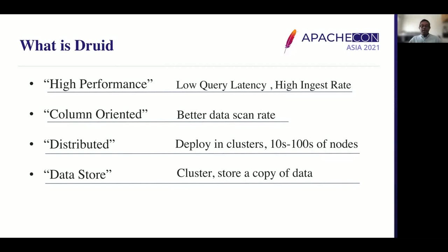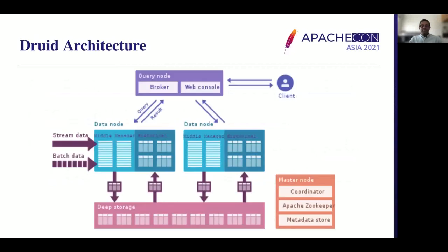For those new to Druid, let me take a minute to explain the Druid architecture and its components. We have query node, data node, and master node. The master node holds the coordinator service, which coordinates and manages all the historical data. The overload service manages the ingestion part. The query node accepts queries, splits them into multiple sub-queries, and sends them to the data node. Once it receives results from the data node, it merges them and sends them to the client.